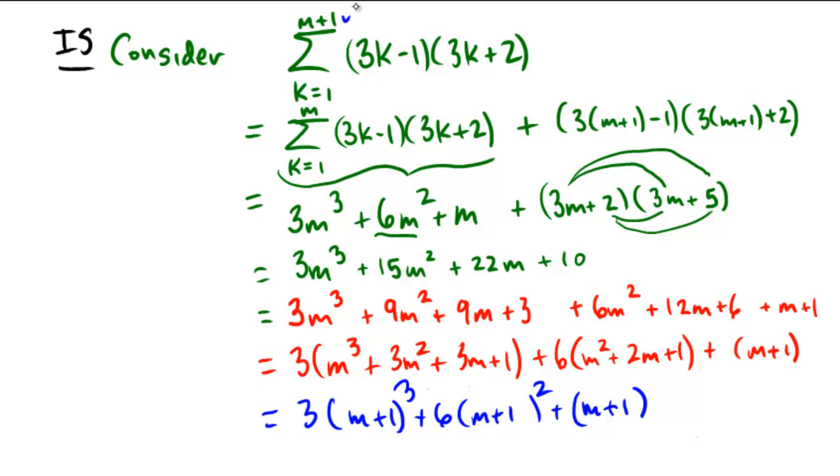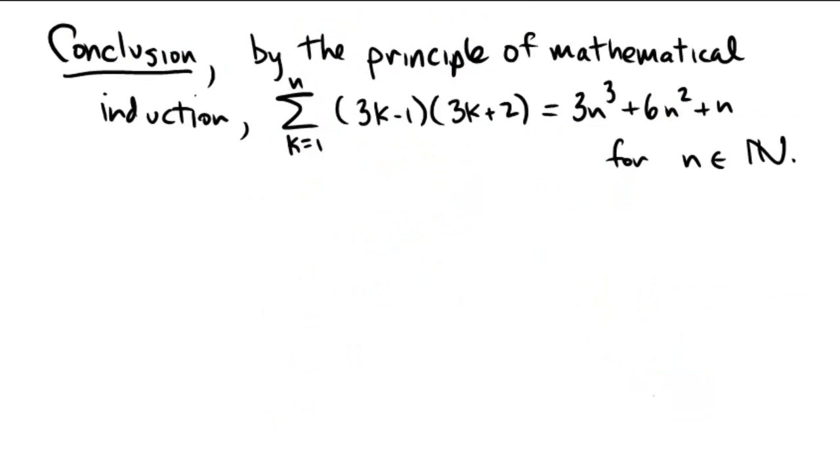Okay, so after that inductive step, which assumed the induction hypothesis and then showed it in the m plus 1 case, we now conclude that by the principle of mathematical induction, the sum of k equals 1 through n of 3k minus 1 times 3k plus 2 is equal to 3n cubed plus 6n squared plus n for all natural numbers. And this completes our proof.